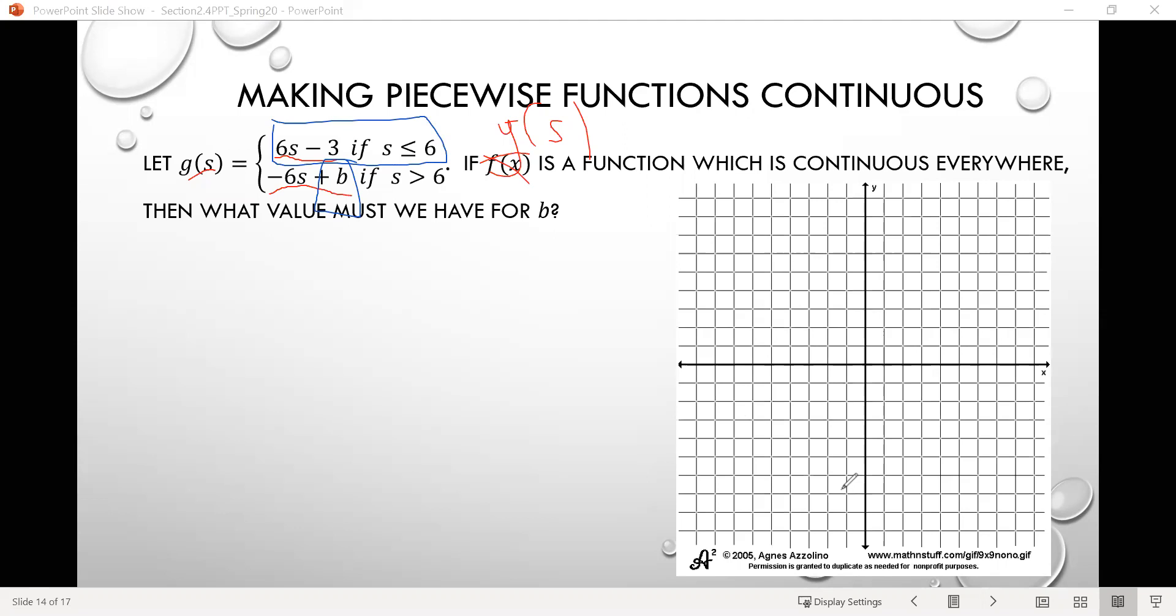So what I'm actually going to do here is start by just graphing that. So if we think about it, the function 6s minus 3, that's a linear function. And according to what we're given, we only use that for values of s, our input variable that are less than or equal to 6. So what I'm going to do here is I'm first going to input 6 into that function. So if I do that, I'll have 6 times 6 minus 3, which give us 36 minus 3, which is 33 is the output there.